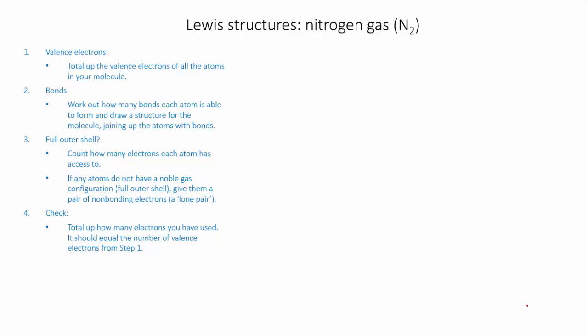Let's do some examples. We'll start with nitrogen gas and go through the same steps from the last video. The first thing is to total up the valence electrons. We're doing nitrogen gas, N₂, so we have two nitrogen atoms. Nitrogen is group 5 with five valence electrons, so with two nitrogen atoms we have 10 valence electrons in total.